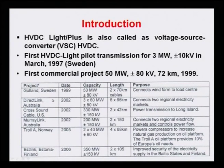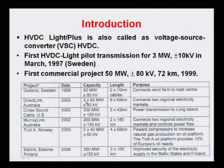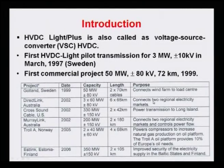The second listed project is the Direct Link in Australia, commissioned in 2002, carrying 3 × 60 MW — three bipolar lines of 60 MW each — giving a total capacity of 180 MW at ±80 kV. Six cables were used (one positive and one negative per bipole, times three). The line length was 65 kilometers and it connects two regional electricity markets.